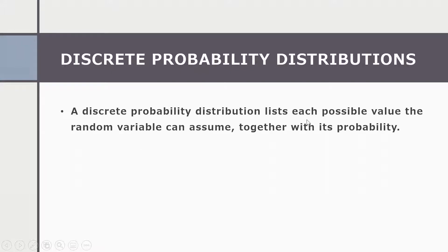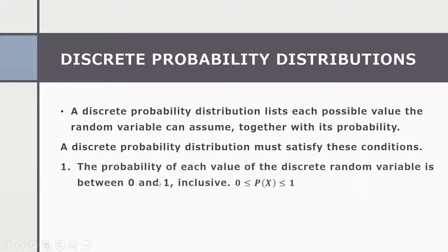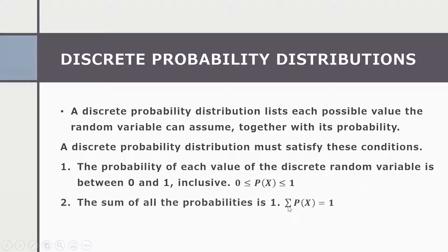A discrete probability distribution lists the possible values the random variable can assume together with its probability. It must satisfy two conditions: first, the probability must be between 0 and 1, meaning no negative probability and no probability greater than 1. Second, the sum of all probabilities must be equal to 1. If either condition is not satisfied, the given distribution is not a discrete probability distribution.